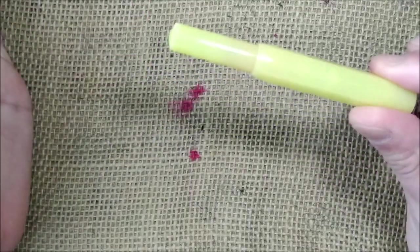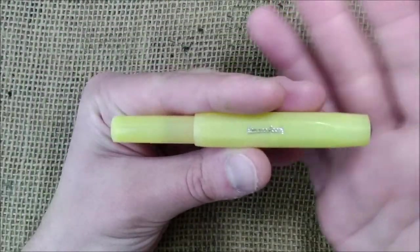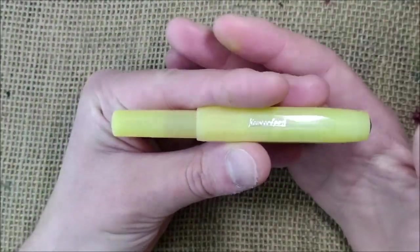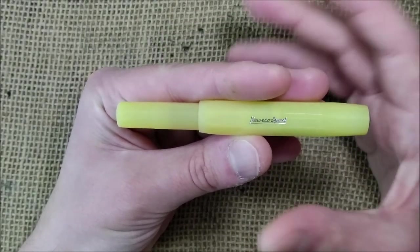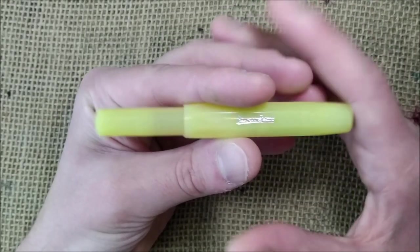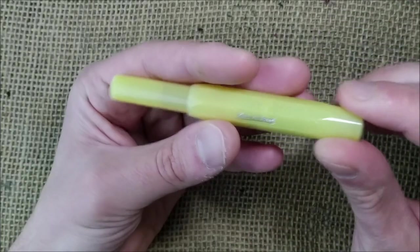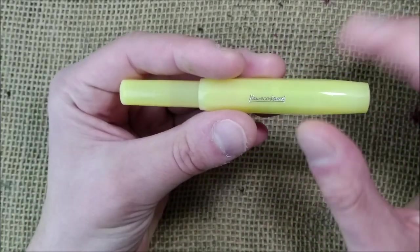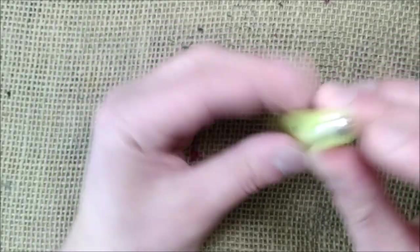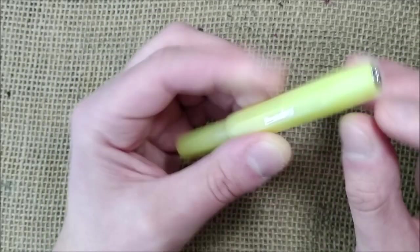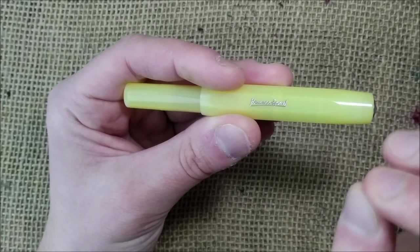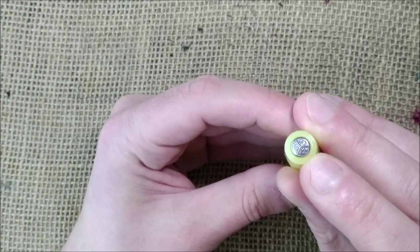You can check the overview that I made of the Kaweco Frosted Sport collection so you can see there all the details. But this is a pen with the Kaweco Sport shape with chrome details like this.